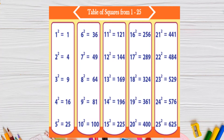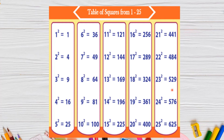Here are some examples of perfect square numbers obtained from squaring a whole number: 1, 4, 9, 16, 25, 36, 49, 64, 81, 100, 121, 144, 169, 196, 225, 256, 289, 324, 361, 400, 441, 484, 529, 576, and 625.